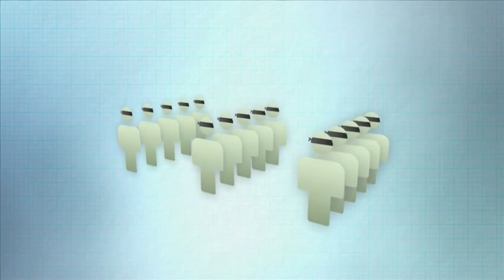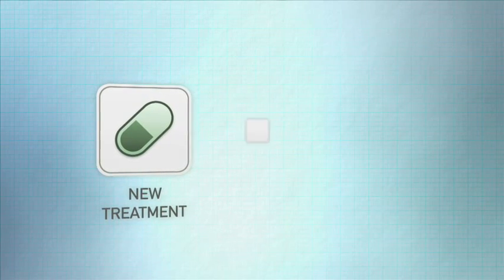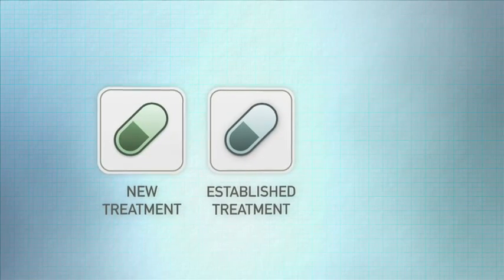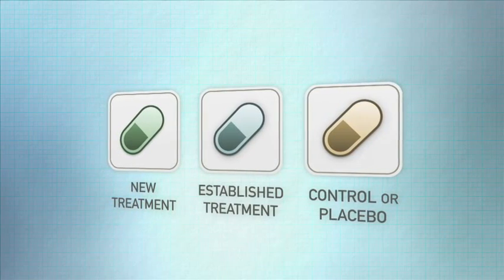They are randomly and blindly assigned to one of several groups. There may be a group that will receive the treatment being studied, a group receiving an established treatment, and always at least one control group receiving a control or placebo treatment.